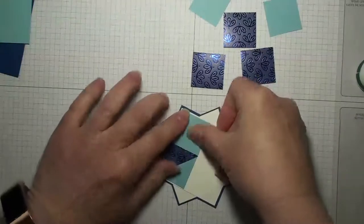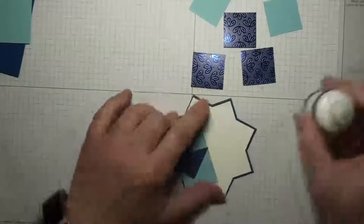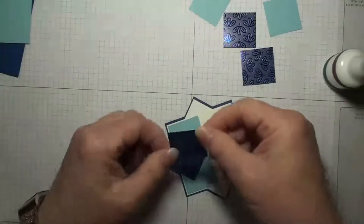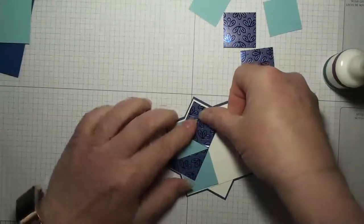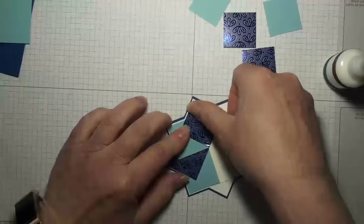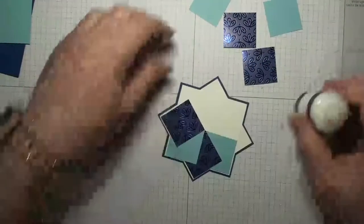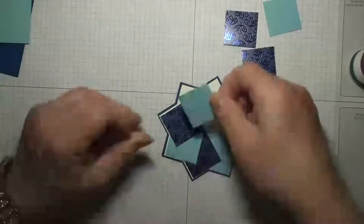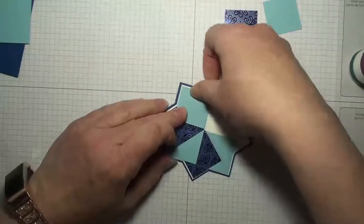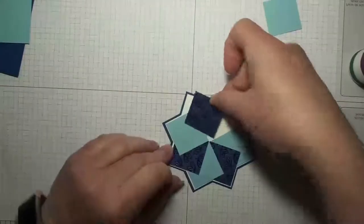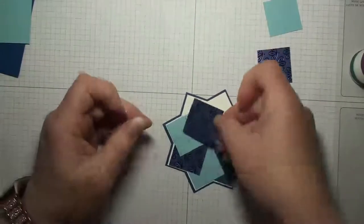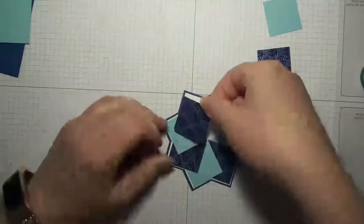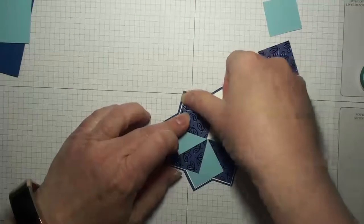So we're just going to keep putting squares down all the way around. And this paper that I'm using this blue foil paper is from the Noble Peacock collection and it does have somewhat of a direction to it. So I'm making sure as I go around that my flowers are going this way instead of sideways. So I am making sure that they're all consistent.